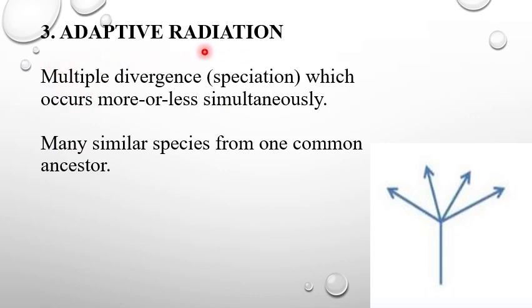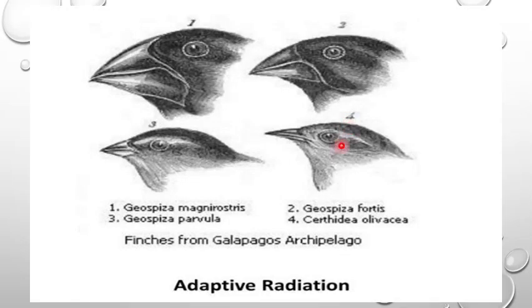Now, the third one is adaptive radiation. It is the multiple divergence or speciation which occurs more or less simultaneously. Many similar species from one common ancestor. In this diagram, you can see the finches from Galapagos Islands. This is the example which is known as classic example for adaptive radiation.